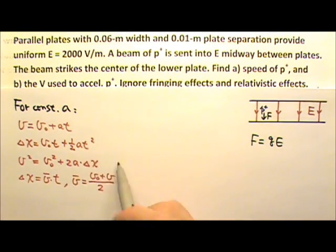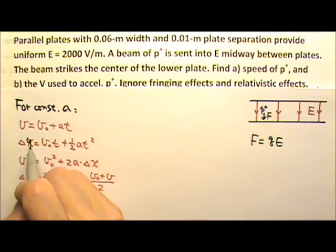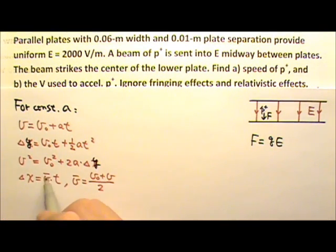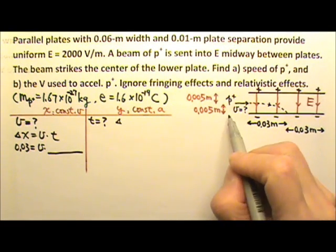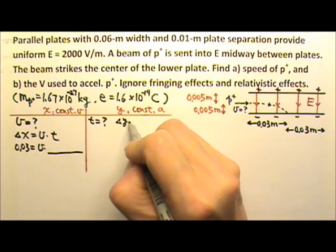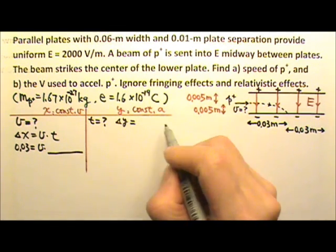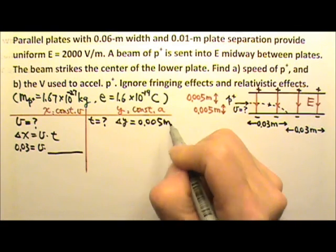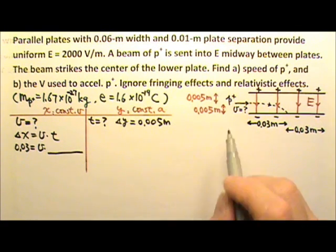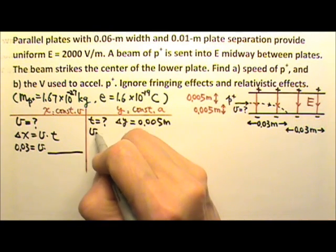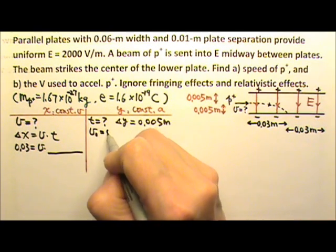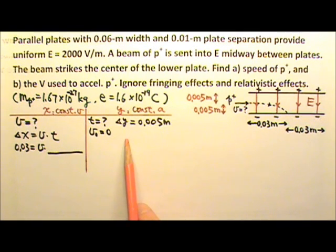Now we're using these equations for the y direction, so we can just change the x to y. For constant acceleration motion, we need to know three things so we can find the time. We know that the delta y is 0.005 meters. We also know that the initial velocity is completely in the x direction, so the initial velocity's y component is zero.